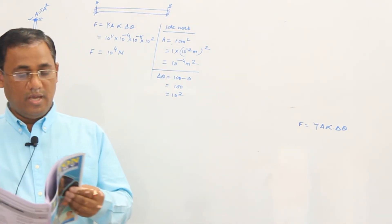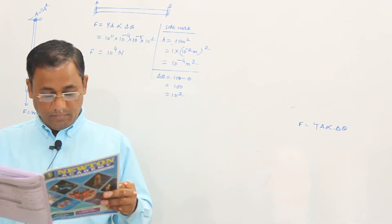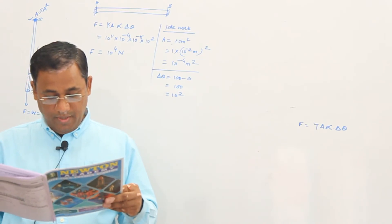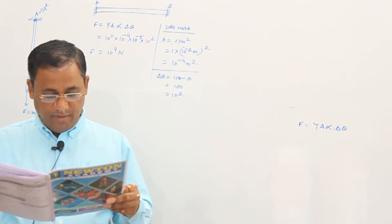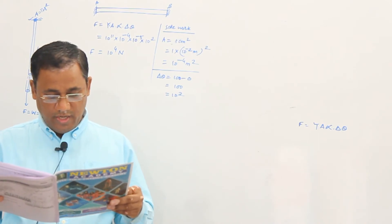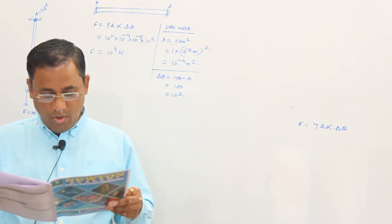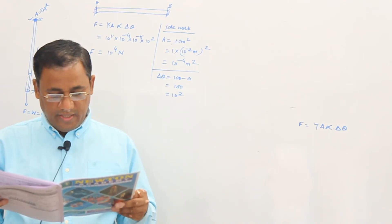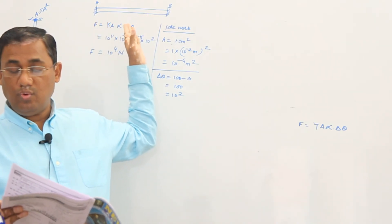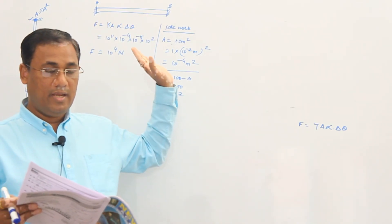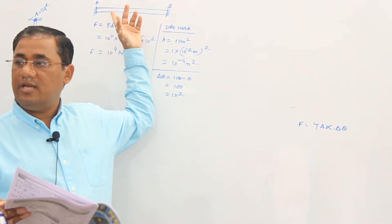Yes. After that, the next problem given to us is also of the same type. This one says: a rod of length L and area of cross-section A is heated from 0°C to 100°C. Same type of problem is given. The rod is so placed that it is not allowed to increase its length. Yes, its length is not allowed to increase. But temperature is being increased, so its length will increase. But length is not allowed to increase, so what will happen?